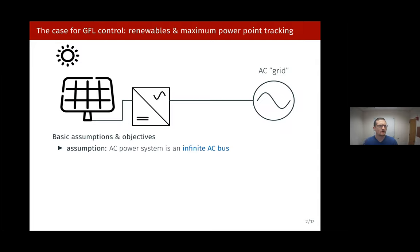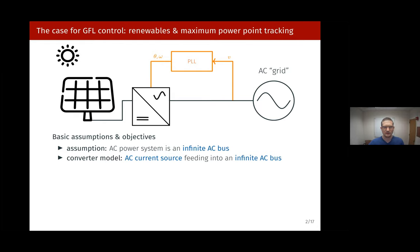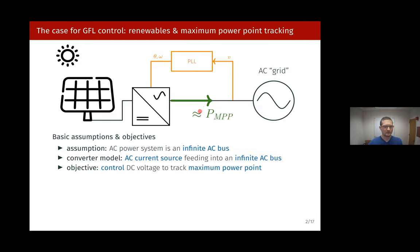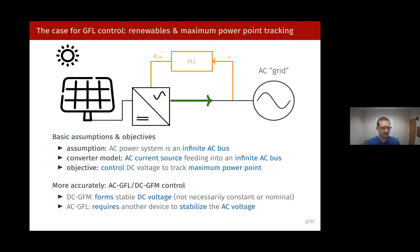Why do we even need grid following control in the first place? The one use case where you genuinely need the standard grid following architecture with a PLL — assuming the AC grid is an infinite bus creating a perfect sine wave, locking on with a PLL, and controlling the converter as a current source — is maximum power point tracking for renewables. Using PV as an example, you control the power injection into the AC grid to stabilize the DC voltage seen by your PV panel so it generates maximum power.